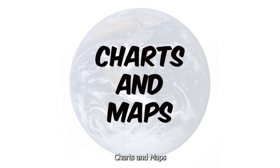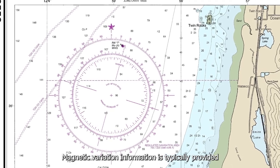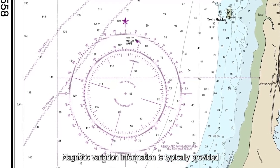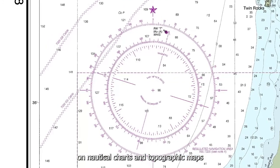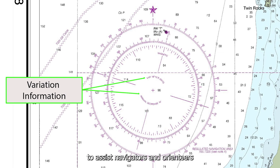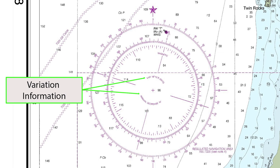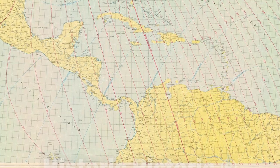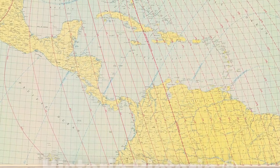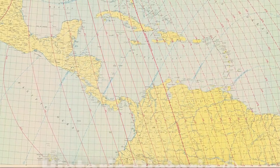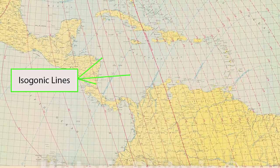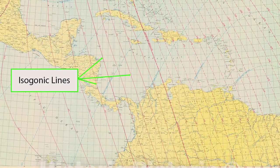Magnetic variation information is typically provided on nautical charts and topographic maps to assist navigators and orienteers in making precise navigation calculations. On nautical charts, the variation is indicated by lines connecting points of equal variation, known as isogonic lines, which help mariners determine the correct variation for their location.